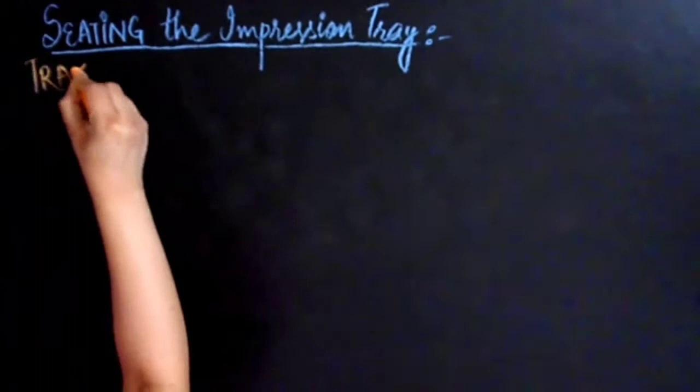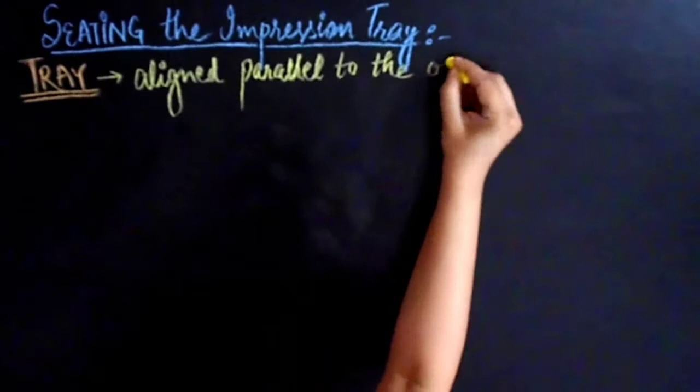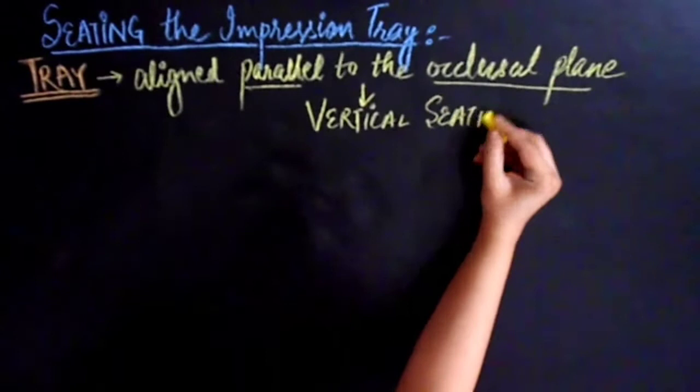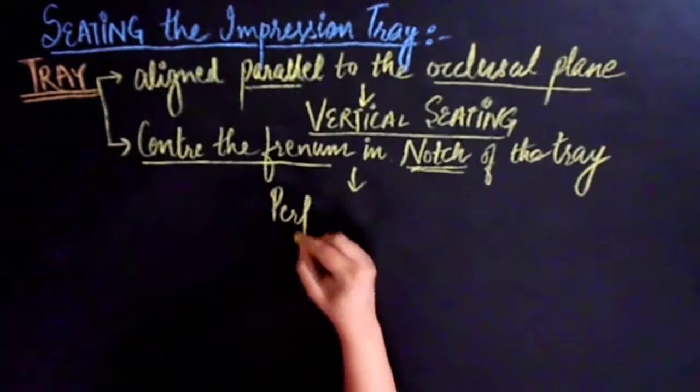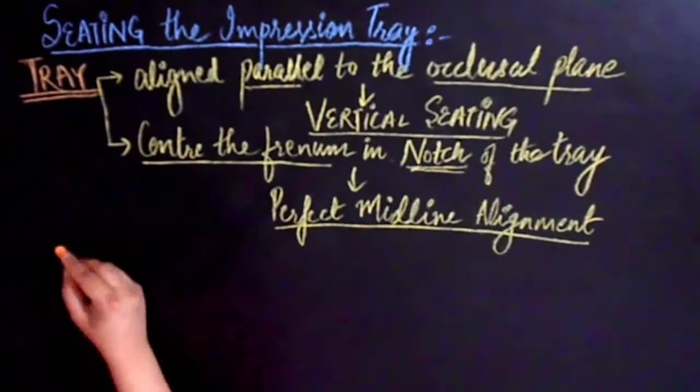Seat the impression in patient's mouth making sure that the tray is aligned parallel to the occlusal plane. The reason for the tray being parallel to the occlusal plane is that we want vertical seating of the tray. Also make sure that the frenum is centered with respect to the notch of the tray for perfect mid-line alignment.